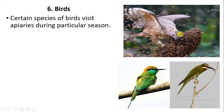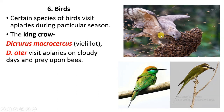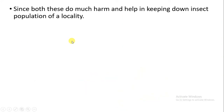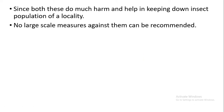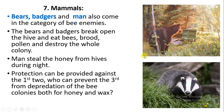The next enemy is birds. Certain species of birds visit apiaries during particular seasons. Birds such as Dicrurus macrocercus and Dicrurus aeneus approach the beehive. Other birds like Merops orientalis and Merops superciliosus sit on trees or telegraph poles near the apiary and pick up bees in flight. They cause great harm to the honeybees. To prevent these birds where the beehive is kept, we can use bore rifles to protect the beehive from all these birds.